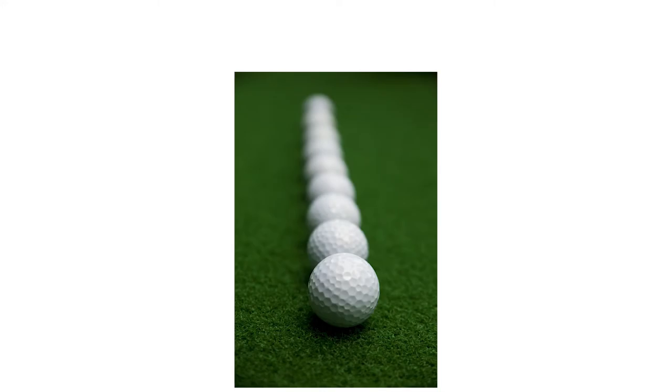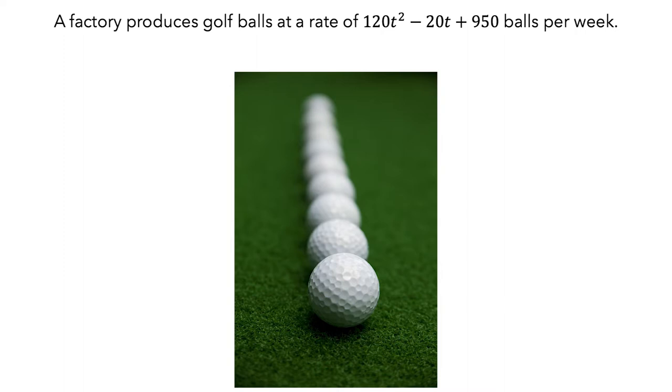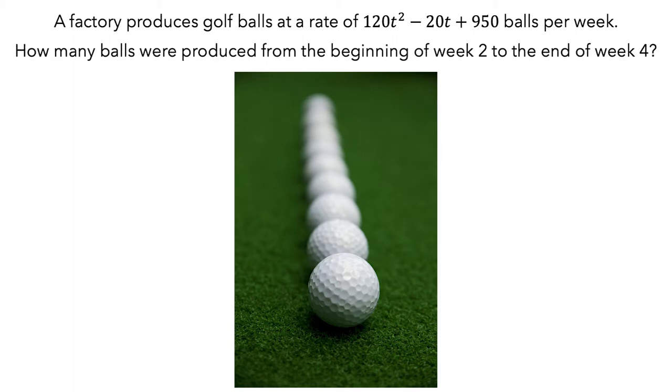In this video, you will see Kelly and Maria working on the following problem. A factory produces golf balls at a rate of 120t² - 20t + 950 balls per week. How many balls were produced from the beginning of week 2 to the end of week 4? As they work, consider the obstacles they encounter and think about how you might solve the problem.